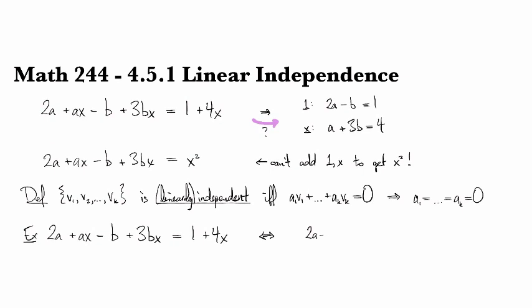So we had 2a minus b minus 1 times 1, and then we had a plus 3b minus 4 as our coefficient of x, and that added up to 0.